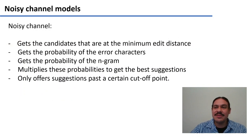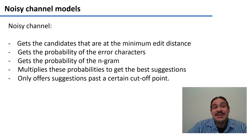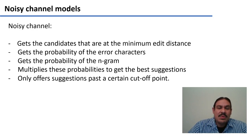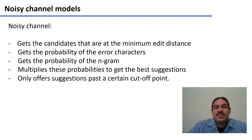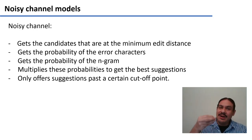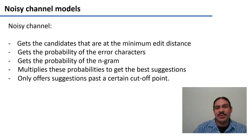That's the summary of how contemporary spell checking works: get candidates at a minimum edit distance, get the probability of the error, get the probability of the n-grams, multiply those probabilities to get a suggestion, and only offer suggestions past a certain cutoff point.